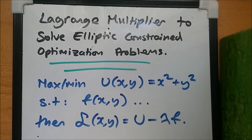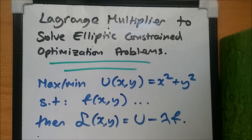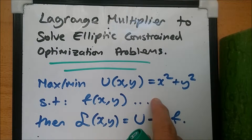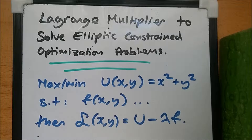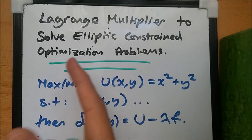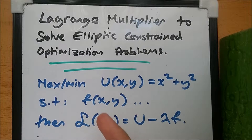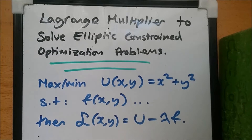Welcome back. In this video we'll be looking to solve elliptic problems using something known as the Lagrange multiplier. This is such a powerful tool because it can solve pretty much any given elliptic problem — equations in the form of an ellipse or circle. The Lagrange multiplier is used to solve elliptic constraint optimization problems, and it's great for calculating the maximum and minimum distance from, say, the origin.